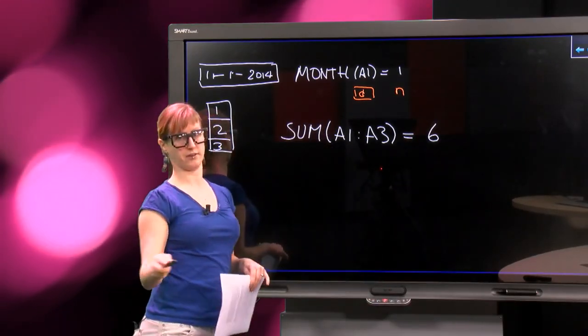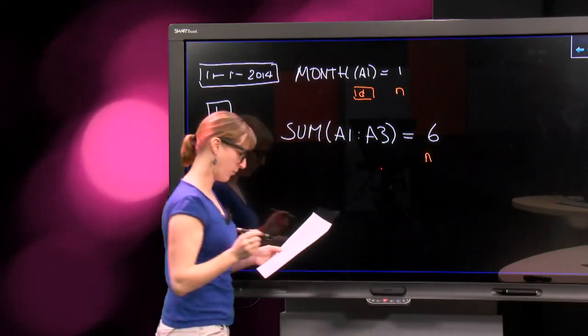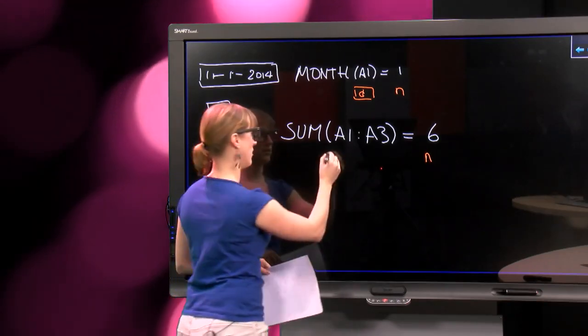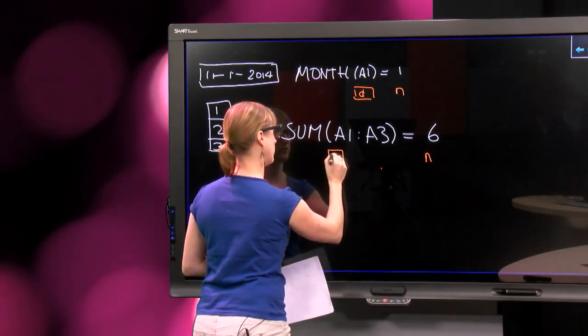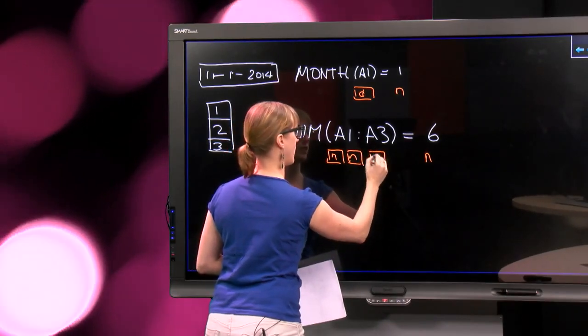So what are the types here? Let's start with 6, because that's super easy, 6 is a number, we know that. But what do we have here? We could say we have 3 number containers, 3 values that have a number.